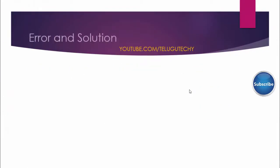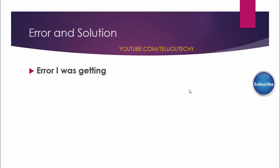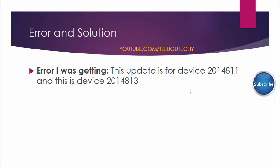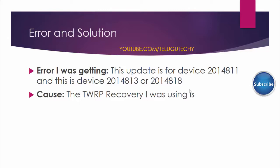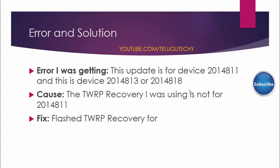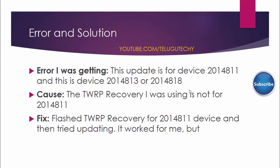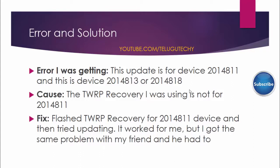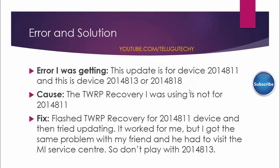Error and solution. The error I was getting: 'This update is for device HM2014811 and this is device HM2014813 or HM2014818.' Cause: the TWRP recovery I was using was not for HM2014811. Fix: I flashed TWRP recovery for the HM2014811 device and then tried updating — it worked for me. But I encountered the same problem with my friend and he had to visit the MI service center, so don't play around with HM2014813.